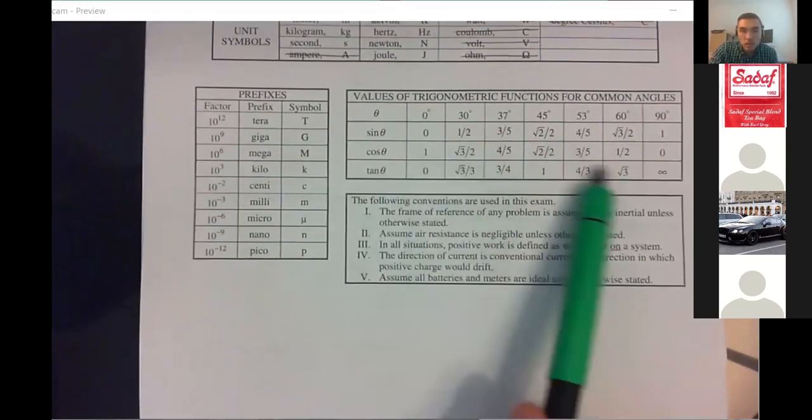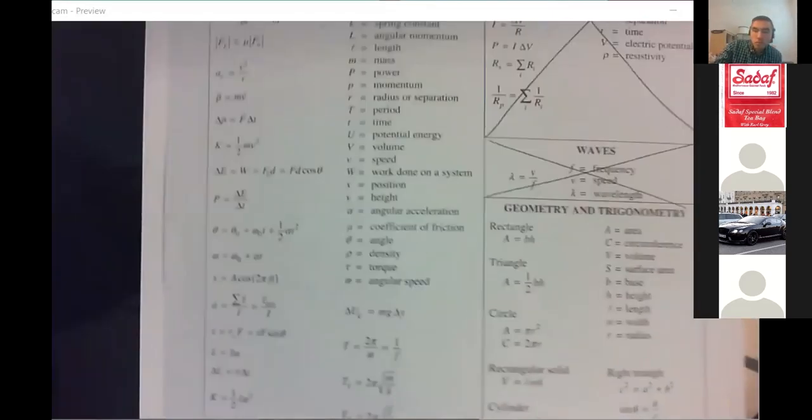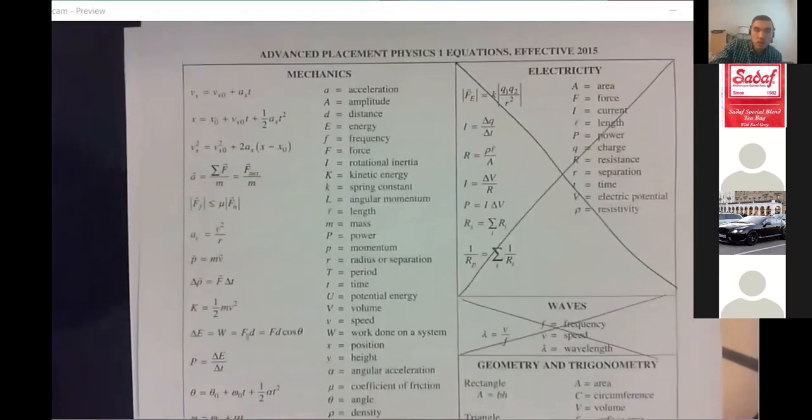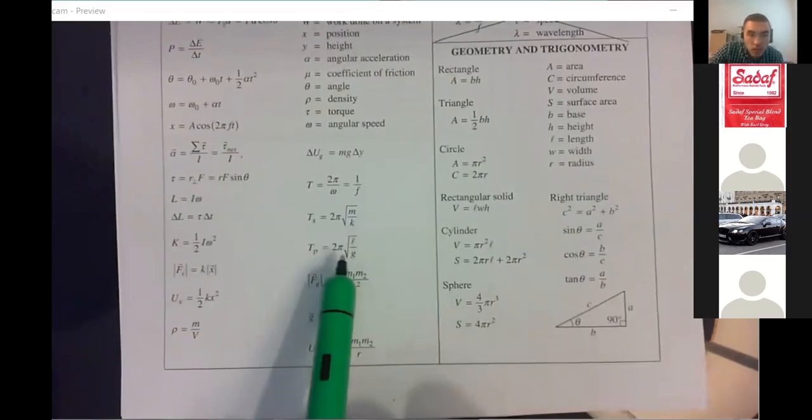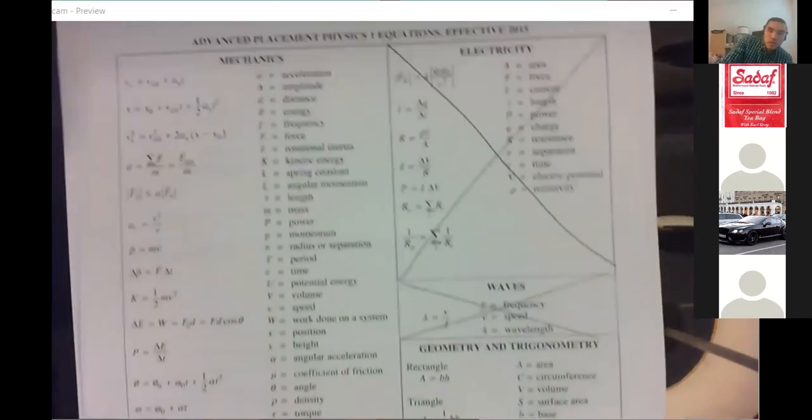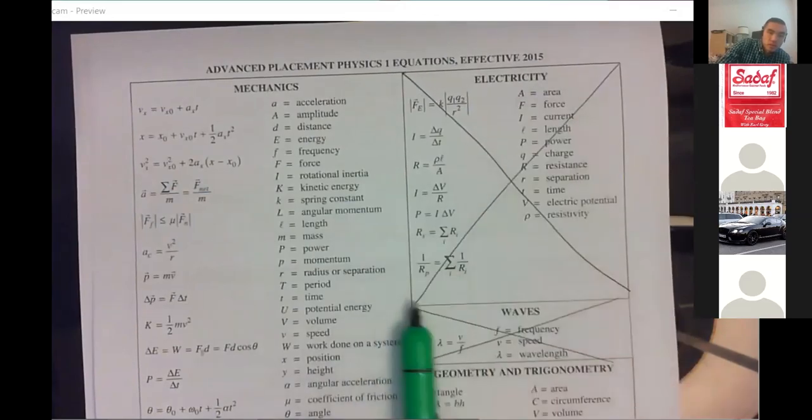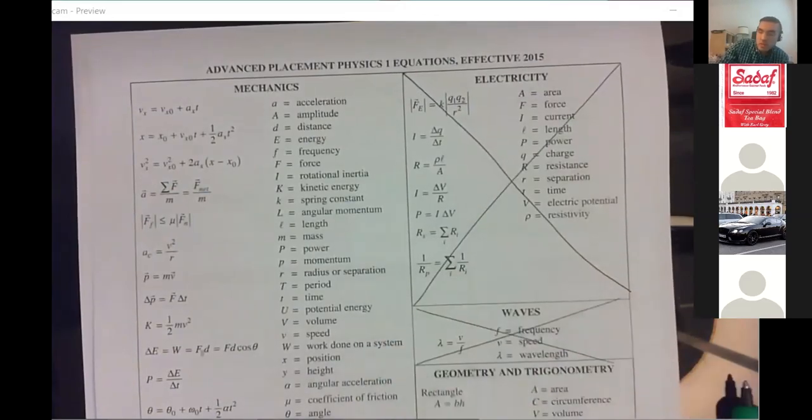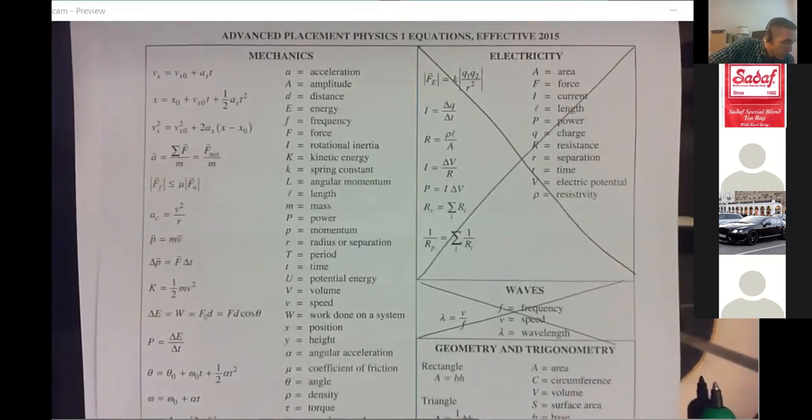Backside, we now have every single equation because we have all of our common equations of motion, and then down below we have to add on the period of a spring mass, the period of a pendulum, and then you don't need these two top right boxes at all. Nothing for electricity, nothing for mechanical waves. You can just delete those two boxes entirely. Are there any questions there on that stuff?